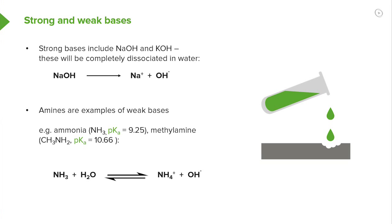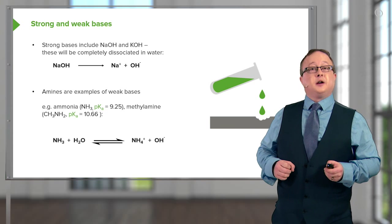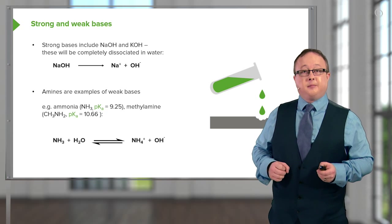Amines are also examples here of weak bases. Remember, we had weak acids - you can also get weak bases. And here we see the pKa. Remember, that is the equilibrium constant associated with the dissociation of the conjugate acid being 9.25. Methylamine is 10.66 pKa.